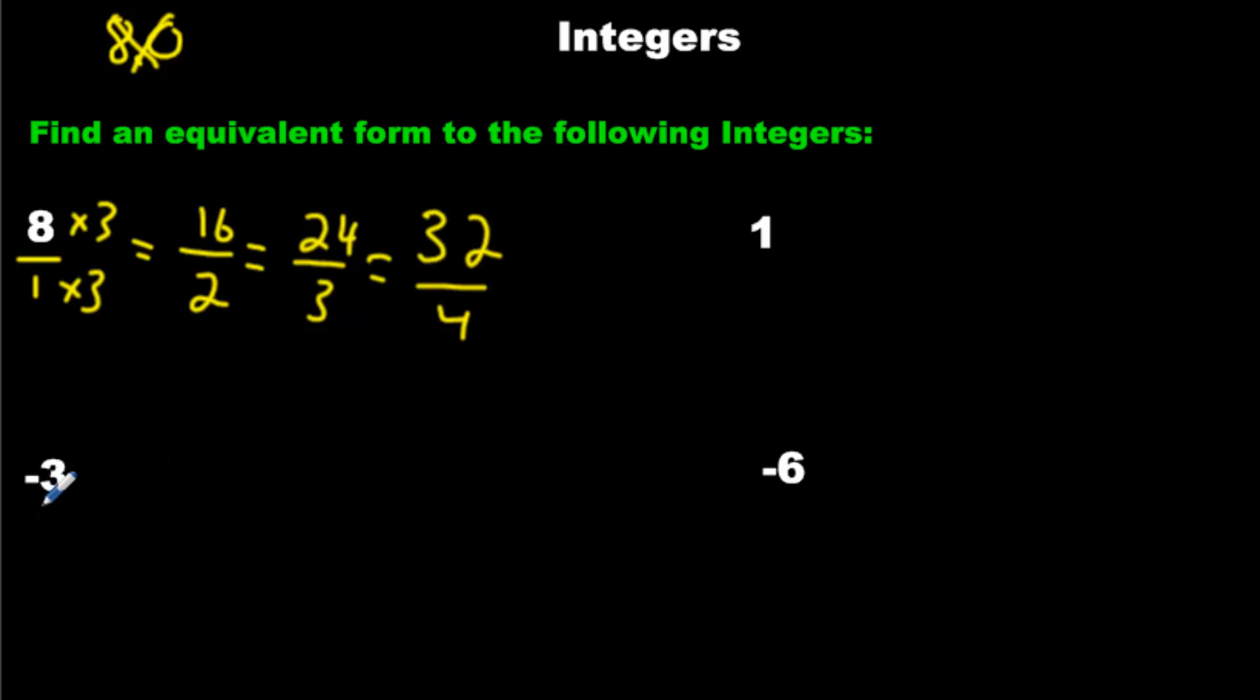The number negative 3 now is an integer. Let's turn it into an equivalent fraction. Negative 3. If I times the top and the bottom, where's the bottom? It's not written in there because it's an integer. You're not allowed to write it in, but let's break the rule here. We'll put a 1 on the bottom. If we double the top and the bottom, we create negative 6 over 2.